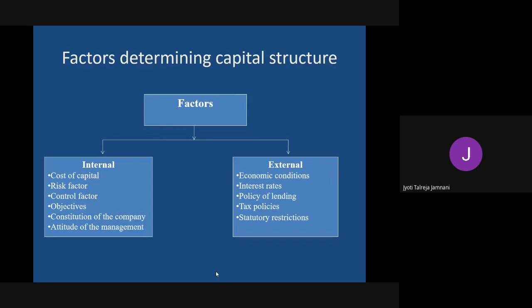The second internal factor is risk. Debt is riskier than equity because shareholders cannot close your company if you don't pay them - they are owners and must accept it. But bankers and debenture holders will sell your assets and recover their money if you cannot pay. If the firm has an appetite for risk, the manager will go for more debt and less equity. If the firm is risk-averse, it will take very little debt and rely more on equity.